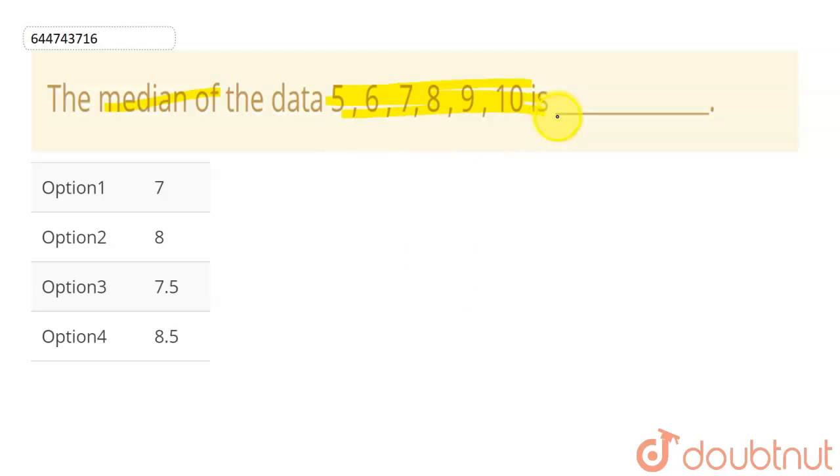Here, my n, which is number of terms or number of data, is 1, 2, 3, 4, 5, 6. There are 6 number of terms, which is even.